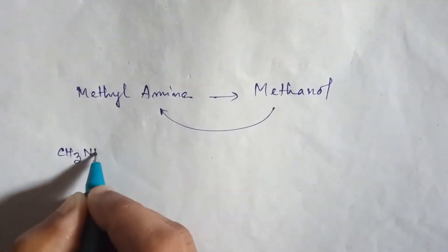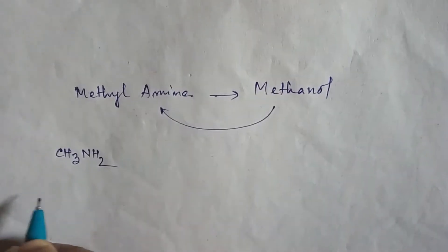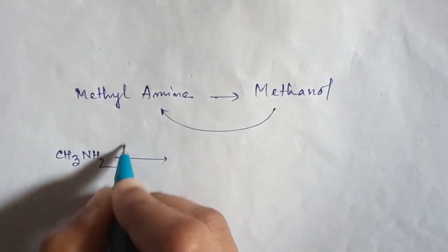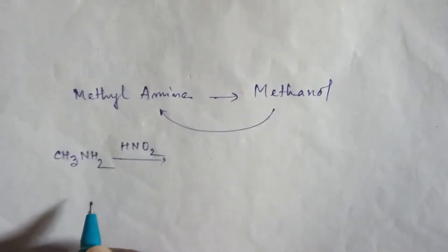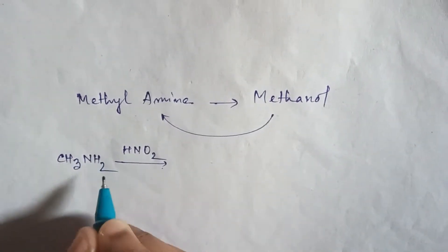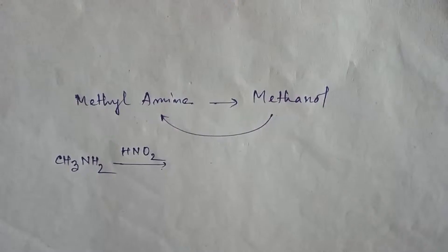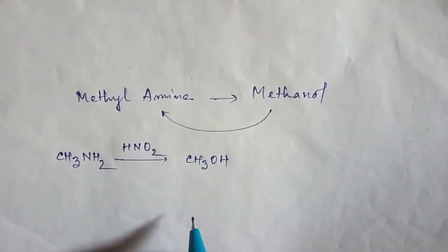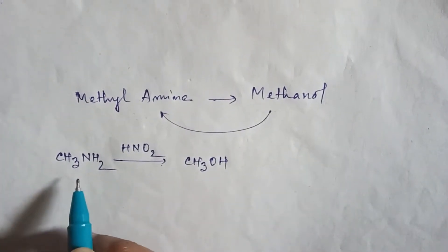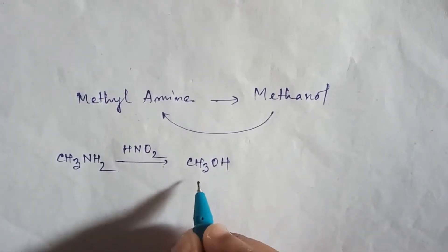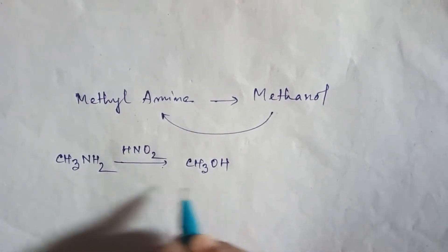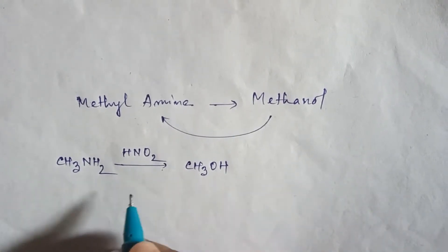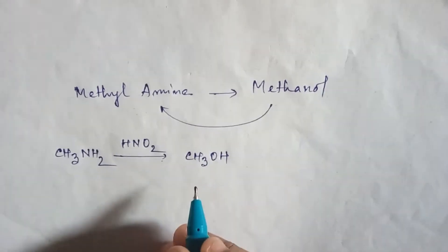First, write the methyl amine formula that is CH3NH2. Now if you use here nitrous acid as a reagent, then this NH2 group will convert into OH group, that is alcohol. So CH3OH. Now you can see this is methyl amine and this is methyl alcohol or we can say methanol. So from methyl amine to methanol, this is just one step process.